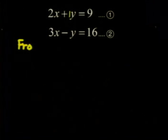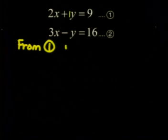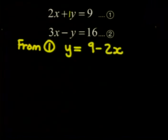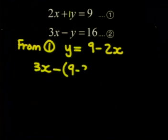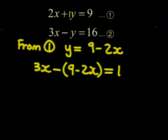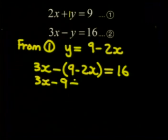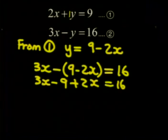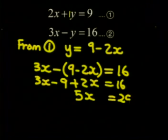Now, y is equal to 9 minus 2x. If I put this value of y into the second equation, I'll be left with only x's. So 3x minus all of 9 minus 2x is equal to 16. The whole bracket must be subtracted, so I must be careful with the signs. 3x minus 9 plus 2x is equal to 16. So 5x is 25. So x is 5.